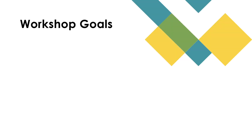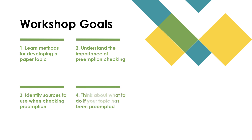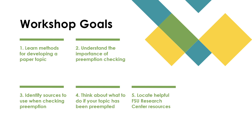Our goals in this workshop include learning some basic methods for developing a paper topic, understanding the importance of preemption checking and when you should prioritize it, identifying sources to use as you conduct your preemption research, thinking about what to do if your topic has been preempted by law or by author, and finally, locating helpful resources at the FSU Research Center.